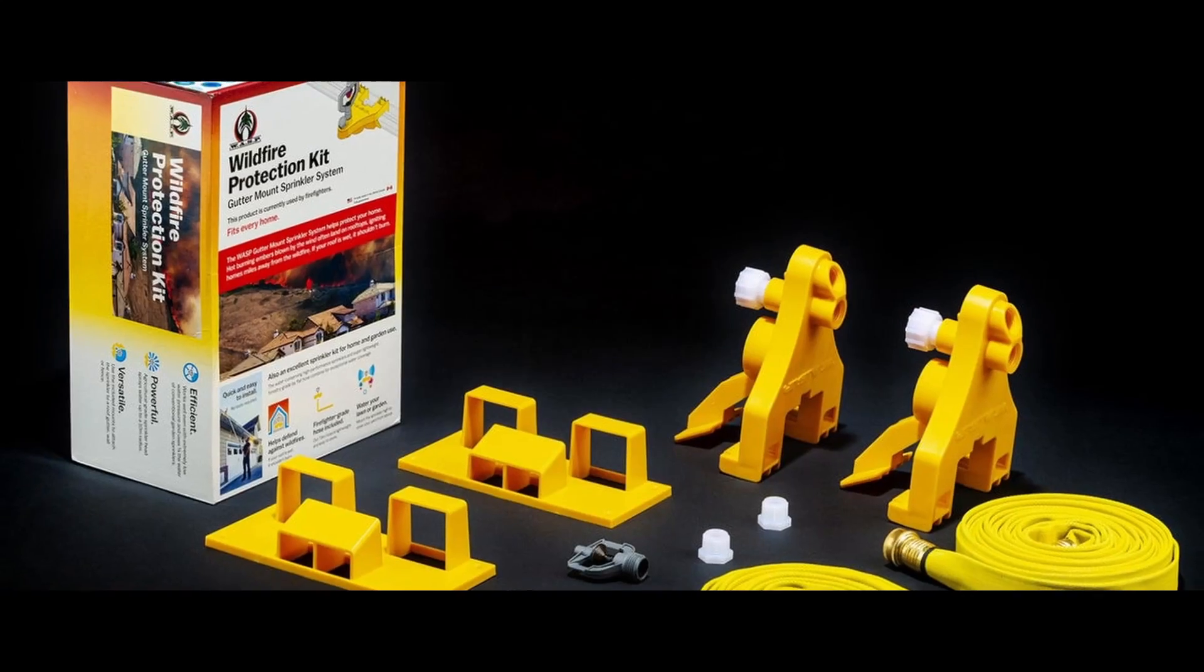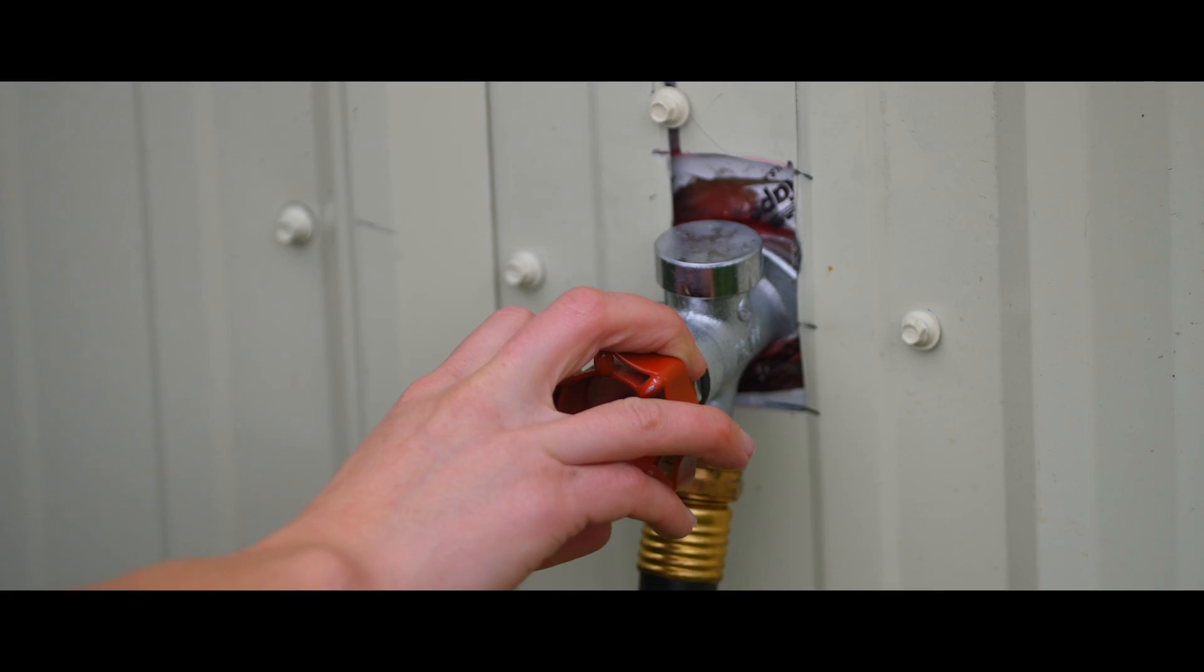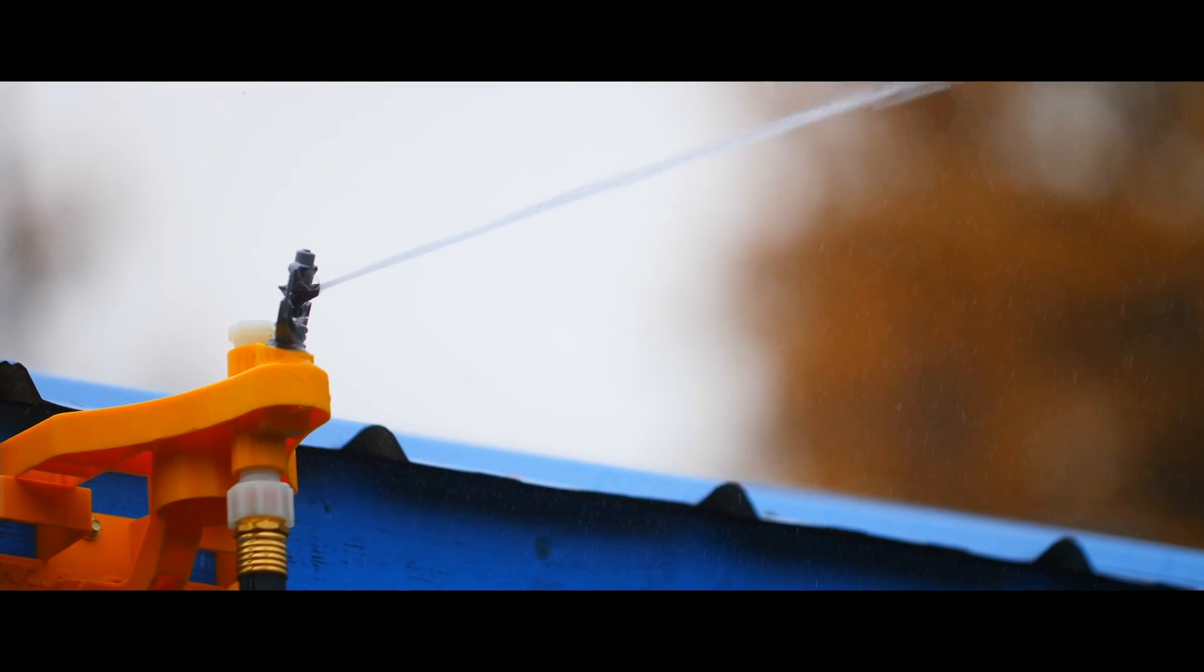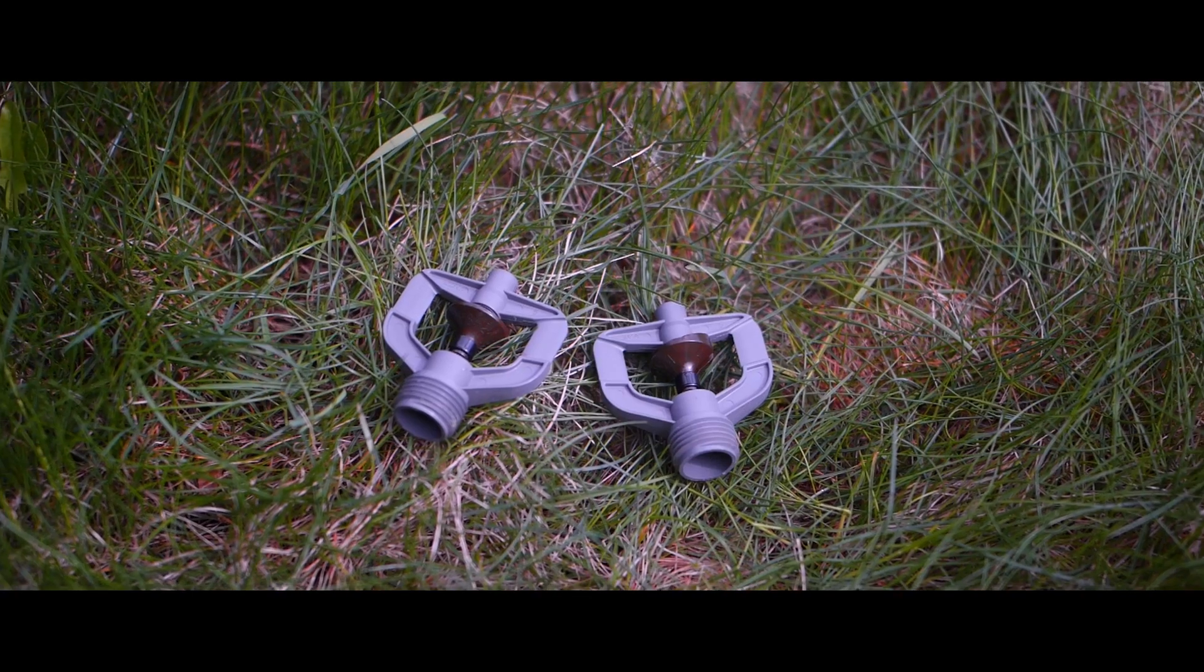In this video we are using the WASP wildfire protection kit. These sprinkler systems can be turned on and left on during an evacuation, and the head is a tenth the weight of a standard brass sprinkler head and is non-impact.